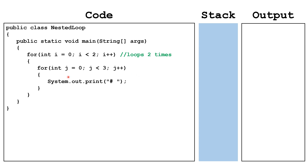Now here we have our inner loop, and for the inner loop we're using the counter j. We've got to have a different counter for the outer loop and the inner loop. j starts out at zero and will continue as long as j is less than three. So this inner loop will loop through three times: when j is zero, j is one, and j is two. Every time the outer loop goes through once, the inner loop will go through three times — so in total, two times three, the inner loop will run six times.